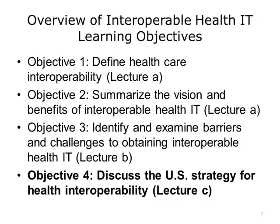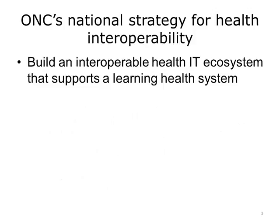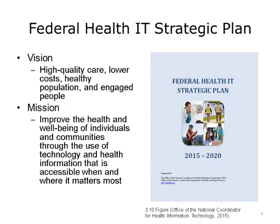This is Lecture C, where we will discuss the National Strategy for Health Interoperability. ONC's National Strategy is to build an interoperable health IT ecosystem that supports a learning health system. The Federal Health IT Strategic Plan is a five-year strategic plan with a vision of high-quality care, lower costs, a healthy population, and engaged people. The mission was to improve the health and well-being of individuals and communities through the use of technology and health information technology that is accessible when and where it matters most.